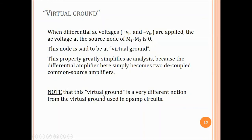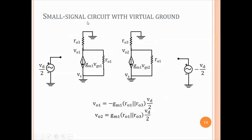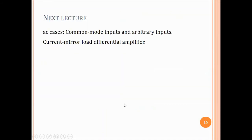Since VS = 0, we can redraw the small-signal circuit with the source terminal grounded. The circuit becomes a simple single-ended common-source amplifier. The voltage gain gives VO1 = −gm1·(ro1 ∥ ro3)·(VD/2), and VO2 = +gm1·(ro1 ∥ ro3)·(VD/2). This is the differential-mode voltage gain of the amplifier. In the next lecture, we'll look at common-mode inputs and arbitrary inputs, followed by the current-mirror load amplifier in the lecture after next.